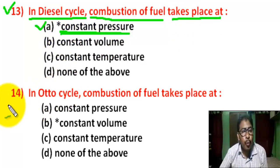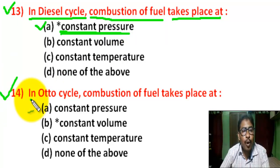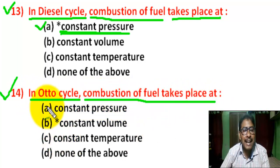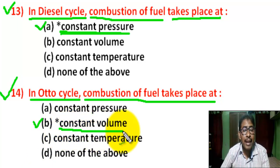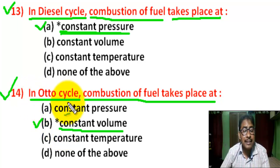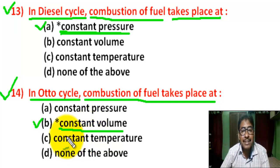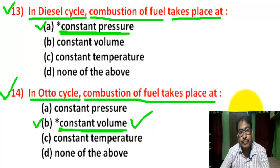Question number 14: In the Otto cycle, combustion of fuel takes place at — there are four options. Correct answer is B — constant volume. At the end of the compression stroke in the Otto cycle, the compressed charge of fuel and air is ignited by a high-intensity spark created by the spark plug. Combustion takes place at constant volume.